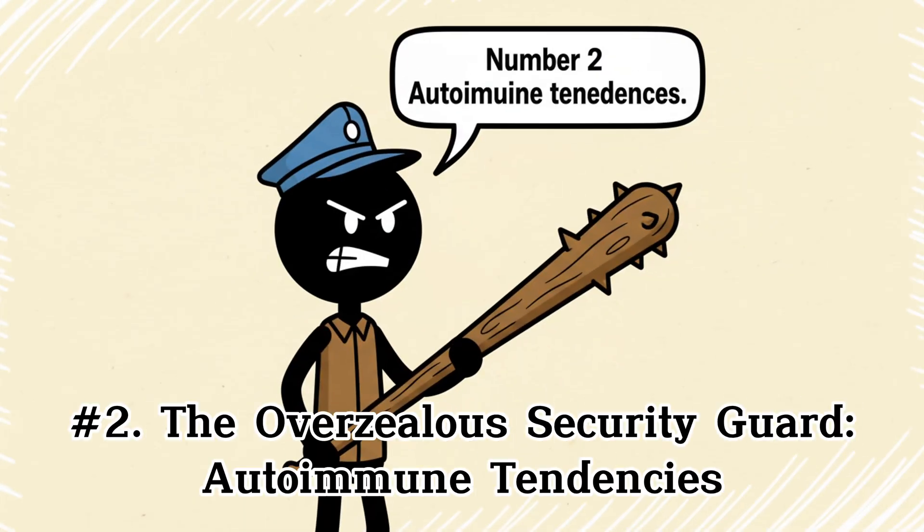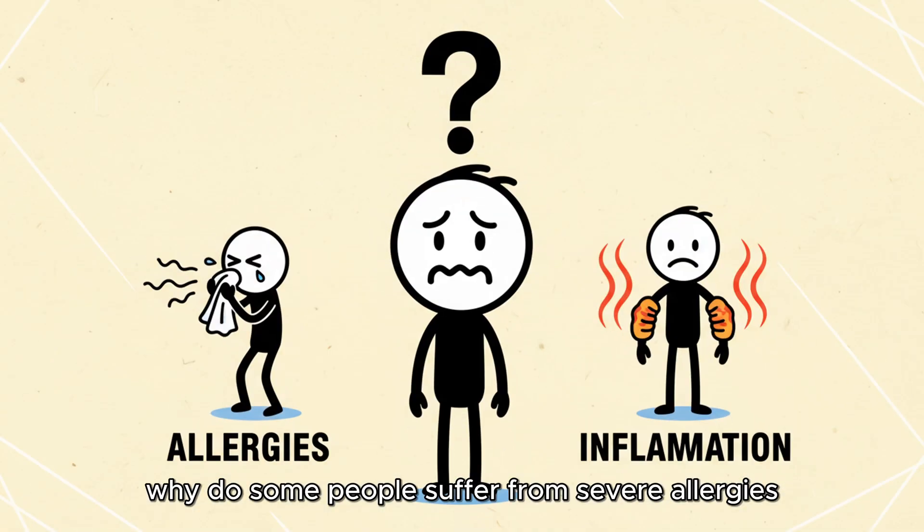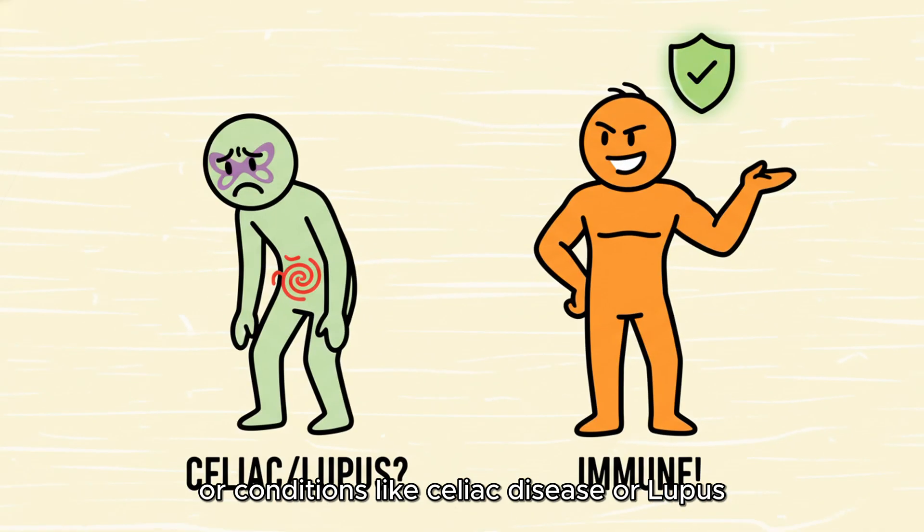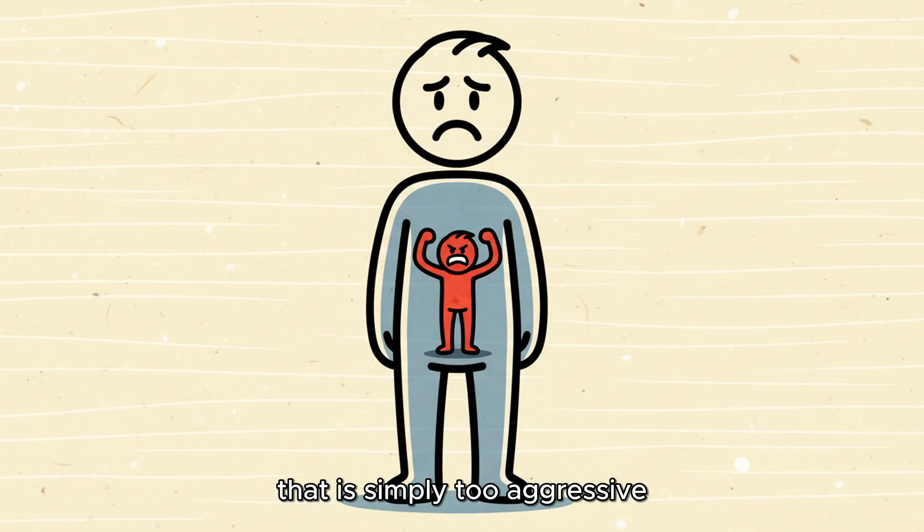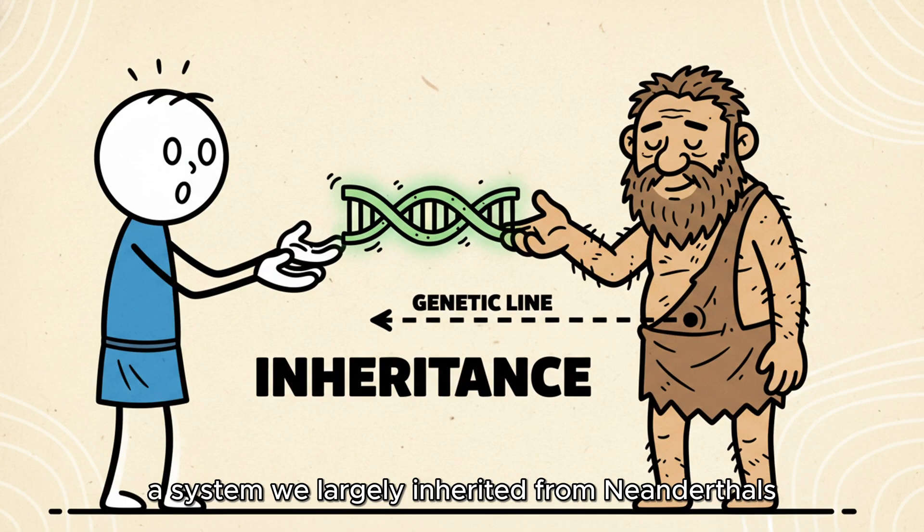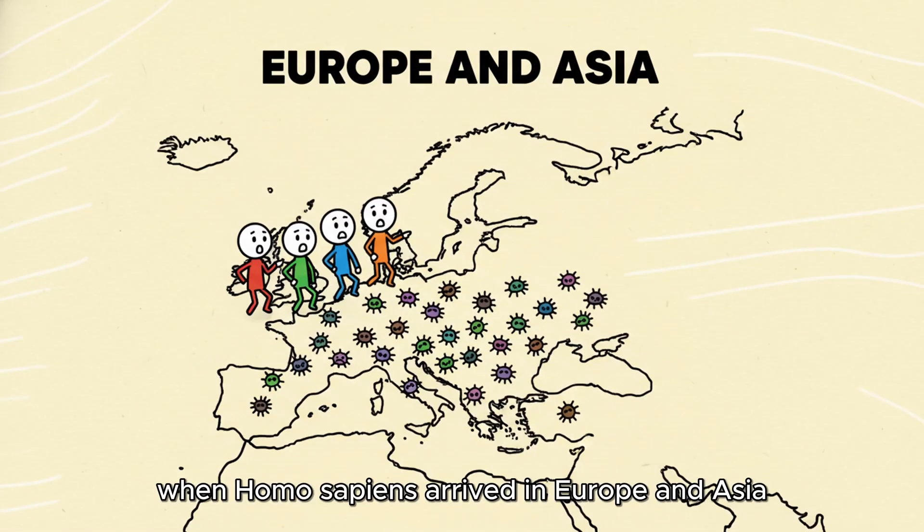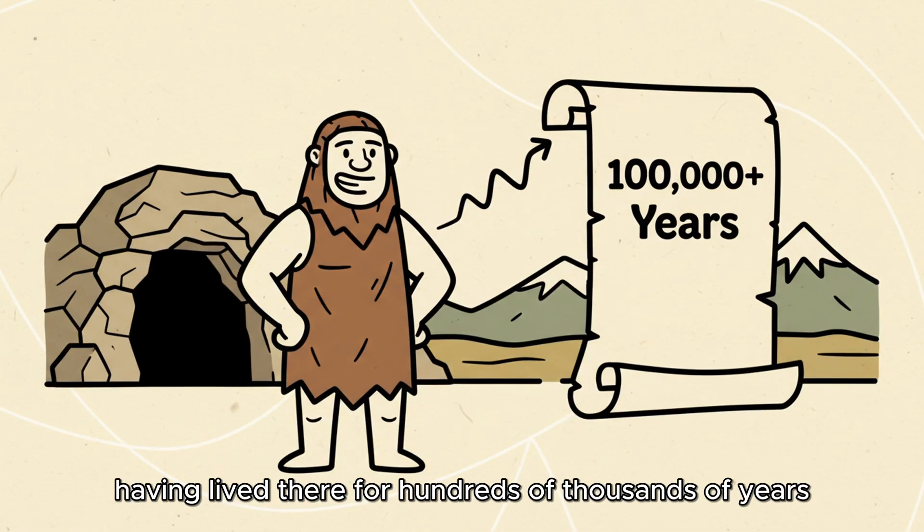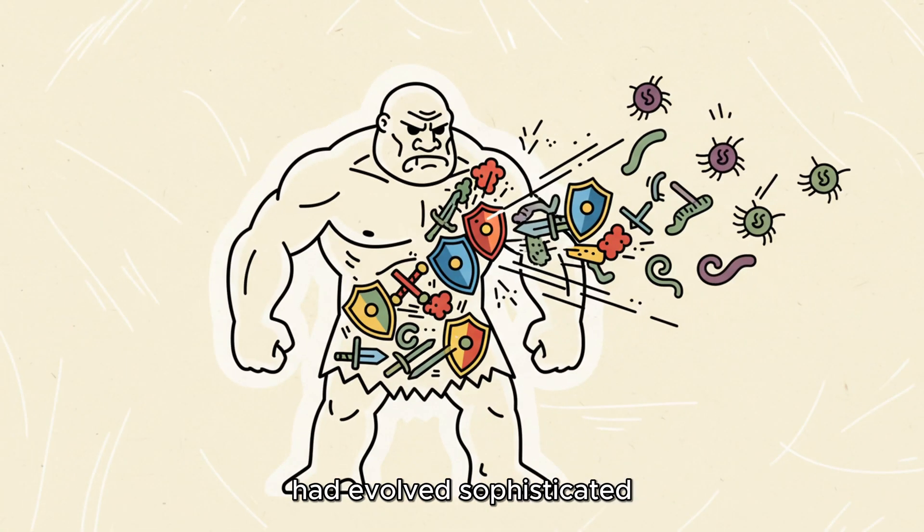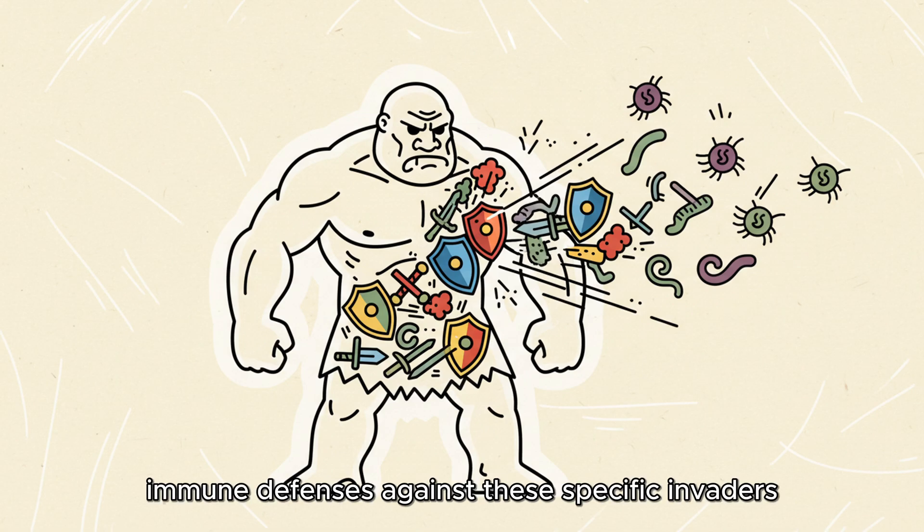Number 2. The Overzealous Security Guard, Autoimmune Tendencies. Why do some people suffer from severe allergies, chronic inflammation, or conditions like celiac disease or lupus, while others seem immune to everything? The answer often lies in an immune system that is simply too aggressive, a system we largely inherited from Neanderthals. When Homo sapiens arrived in Europe and Asia, they encountered a host of local pathogens, viruses, bacteria, and parasites that their bodies had never seen. The Neanderthals, having lived there for hundreds of thousands of years, had evolved sophisticated, aggressive immune defenses against these specific invaders.